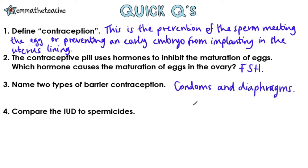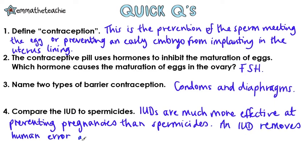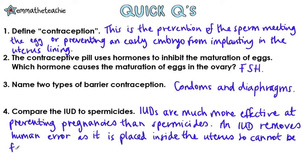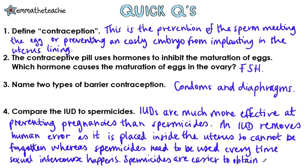Question 4: Compare the IUD to spermicides. IUDs are much more effective at preventing pregnancies than spermicides. An IUD removes human error, as it is placed inside the uterus so it cannot be forgotten, whereas spermicides need to be used every time sexual intercourse happens. Finally, spermicides are easier to obtain, whereas IUDs need a doctor's appointment.